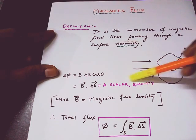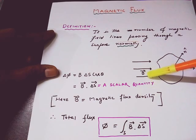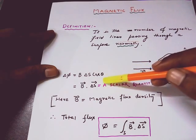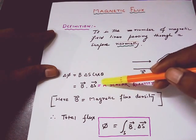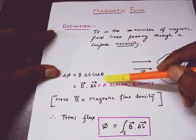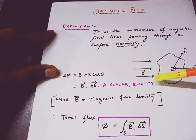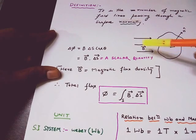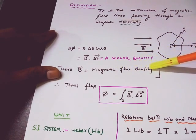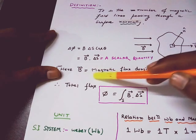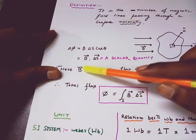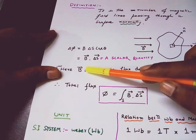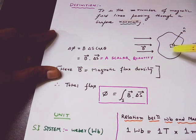So ultimately we come to a conclusion that magnetic flux is a scalar quantity. If a question comes — is magnetic flux a vector? The answer will be no. Is magnetic flux a scalar quantity? The answer will be yes. Here B is actually magnetic flux density, and in the SI system the unit of B is Tesla.